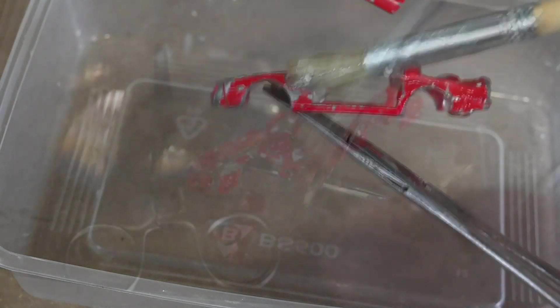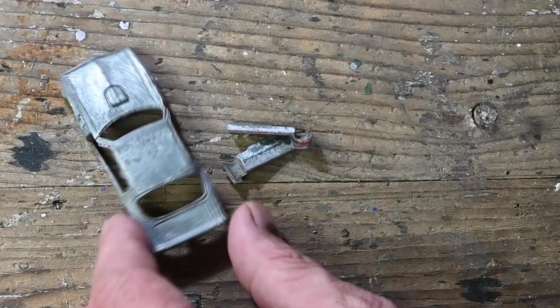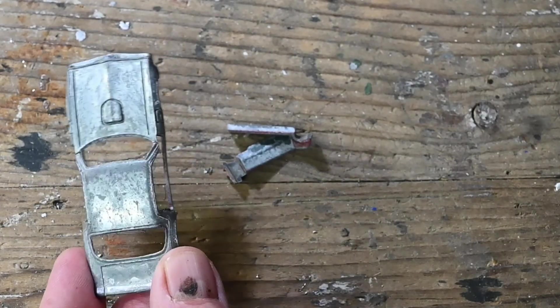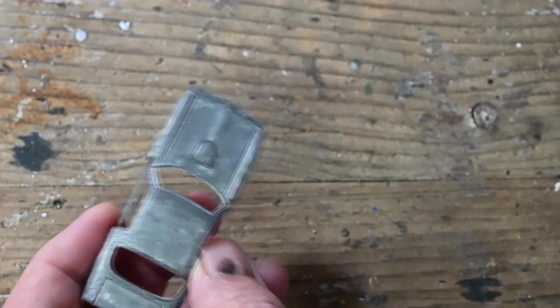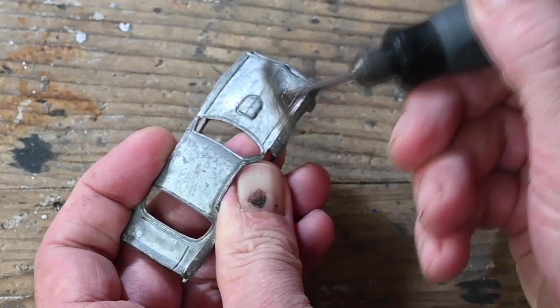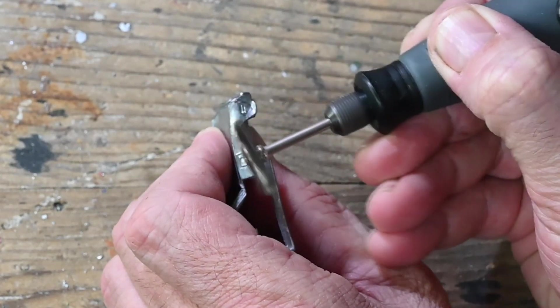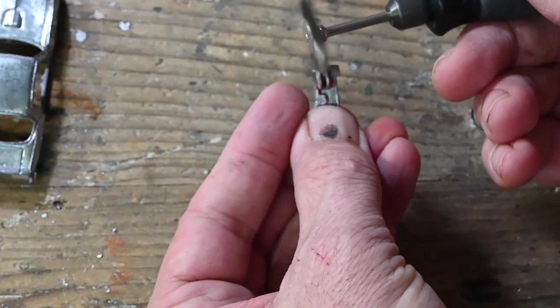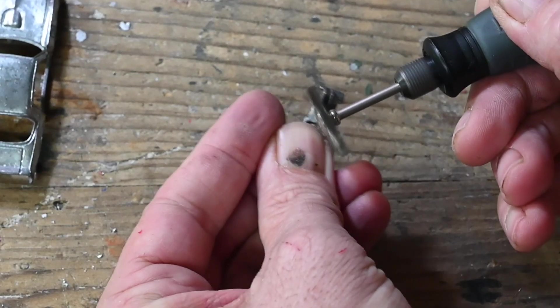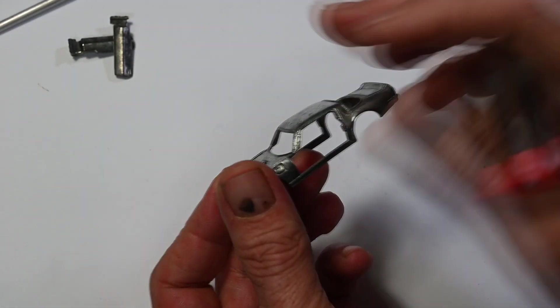So next using some paint stripper to strip the paint off the castings. And then I can give them a clean up with the wire brush on my Dremel and get rid of that oxidation, a few scraps of paint that might still be on there. And here are the castings tidied up and looking a bit more shiny.